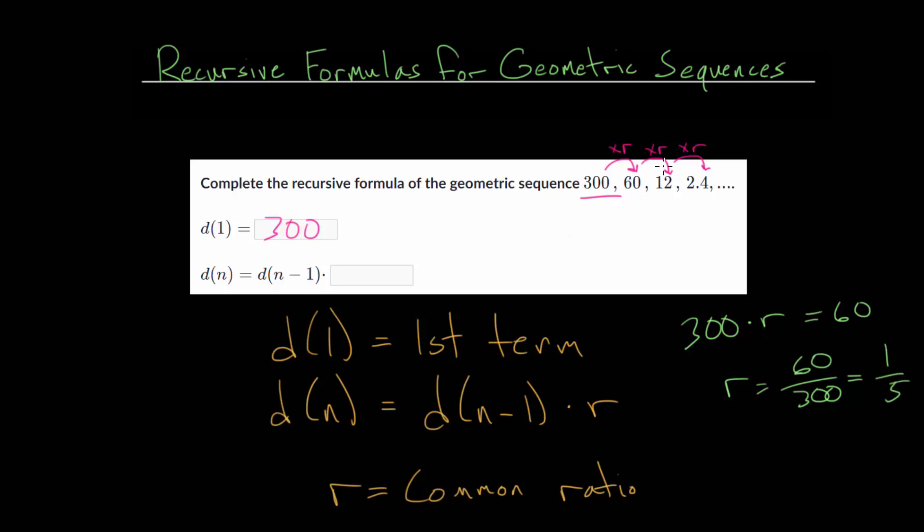Now, you could, in fact, choose any number in your sequence and just divide it by the one before it. For instance, if we took 12 and 60, we could find our common ratio. So it would be, choose one term and divide it by the one before it. So it would be 12 over 60. And that, again, is going to simplify to one-fifth. And the same would be true if we took 2.4 and divided that by 12. So whatever numbers look easiest, just take one of those and divide it by the one before it to figure out that common ratio.